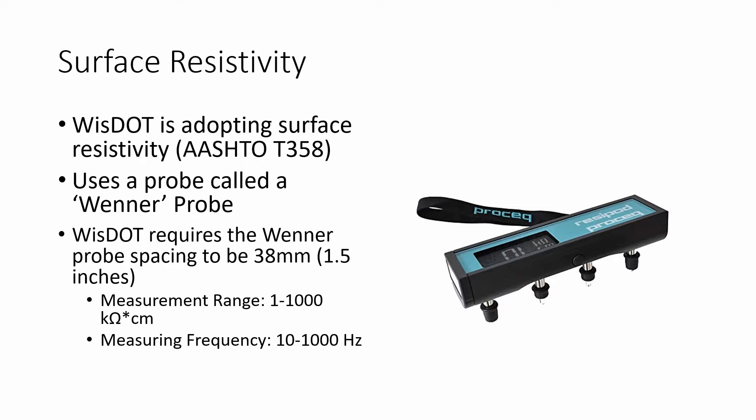This method, covered in AASHTO T358, utilizes a probe known as a Wenner probe. The probe that WISDOT has adopted uses a 38mm or 1.5 inch probe spacing. You need to be cautious when purchasing because there are different probe spacings available in the market. The meter also needs to have the following specs: a measurement range between 1 to 1,000 kilohm centimeters, and a measuring frequency between 10 to 1,000 hertz.